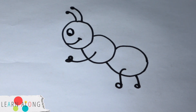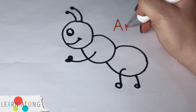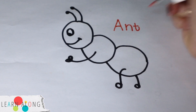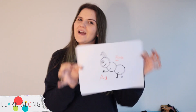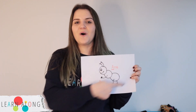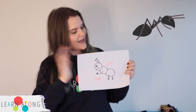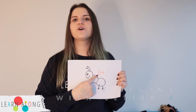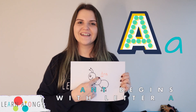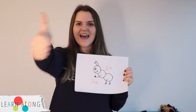Now you can draw a mouth and an eye. It's an ant! Ant. Ant begins with letter A. Now we are finished with our drawing. Do you know what's this animal? Yes, it's an ant. Can you say, hello, ant? Ant. Yes, great job. Hello, ant. Ant begins with letter A. Can you say, ant begins with letter A? Yes, fantastic.